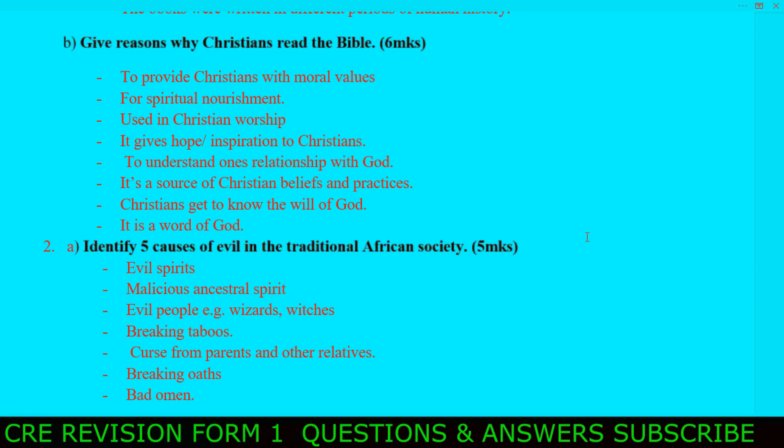Number two: identify two causes of evil in the traditional African society. What are the causes of evil? Number one, evil spirits. Number two, malicious ancestral spirits. Number three, evil people, e.g. wizards. Next, breaking taboos. Next, curse from parents and other relatives.